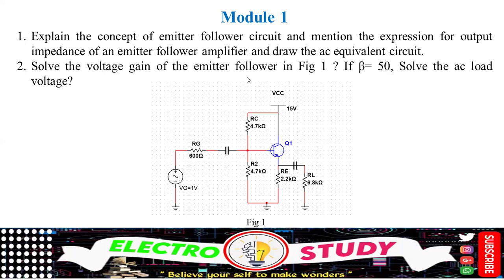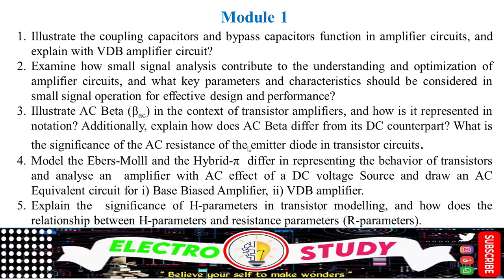Solve the voltage gain of the emitter follower shown in figure 1 — take the gain, beta is equal to 50, where beta means IC by IB. Solve the AC load voltage. In the previous year question paper, I have done a similar kind of question — you can refer to my previous video for that.